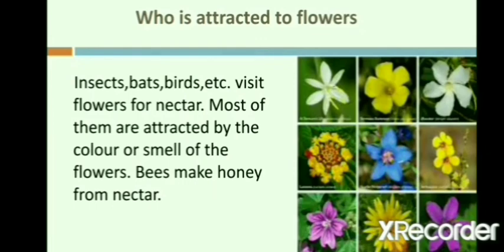Who is attracted to flowers? Different insects, bats, birds, etc. visit flowers for nectar. Most of them are attracted by the color or smell of the flowers. Carnation's bright red or pink color attracts butterflies. The blue and yellow color of the iris flower attracts bees. Magnolia flowers attract beetles because of their strong sweet smell. Flies get attracted towards Rafflesia because it smells like rotten meat.